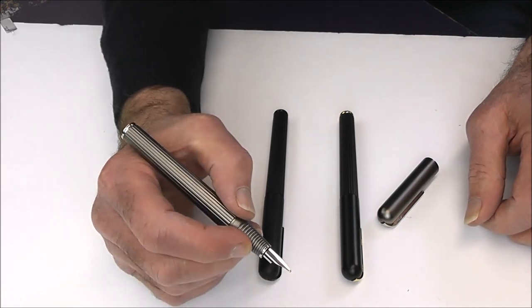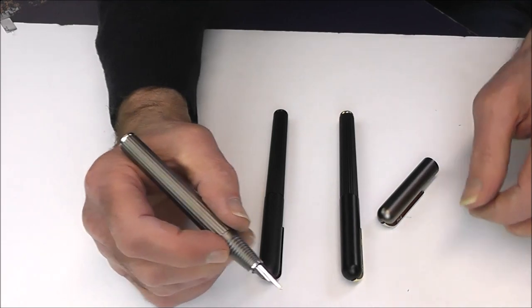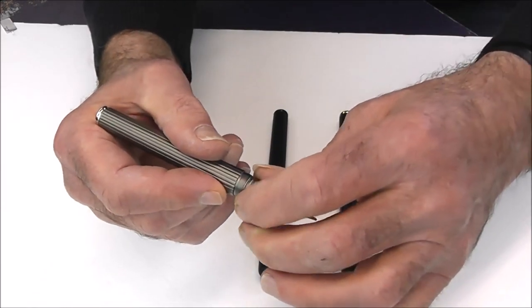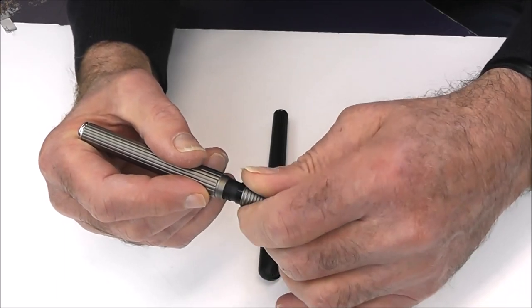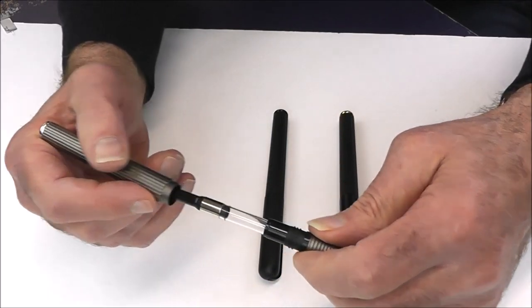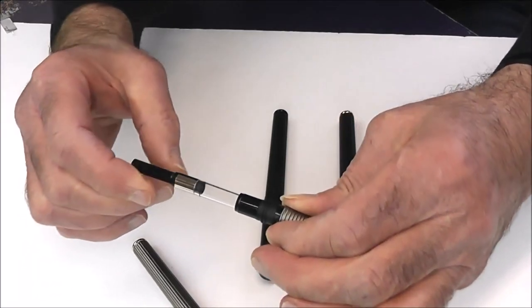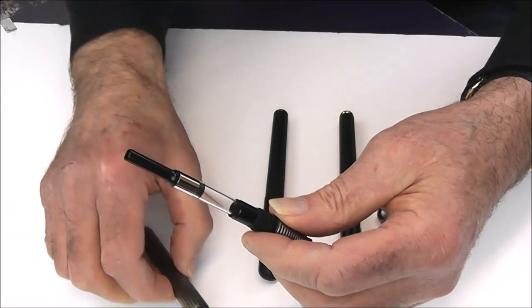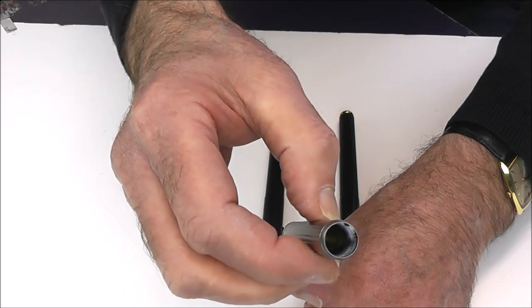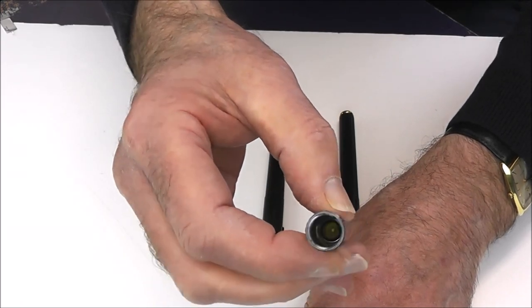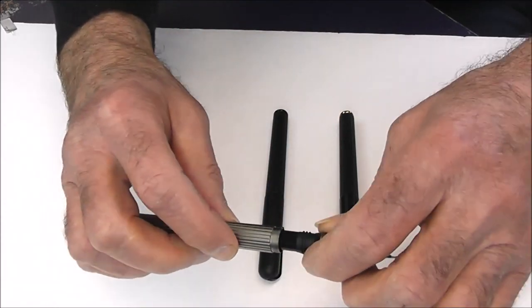Now as with all Lamys, apart from the 2000, this is a cartridge converter pen. So we'll just have a quick look on the insides. The converter isn't inside it, but it does come with a converter of course—at that price you'd expect it to. Oh, it does come with the converter inside, oh well, there we go, what a surprise. So there's the converter, and also looking in the barrel, you can just see it's a very tidily put together piece of work and has a degree of solidity that is very reassuring.